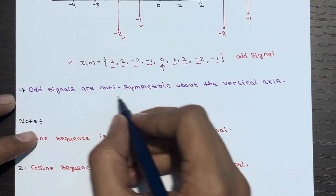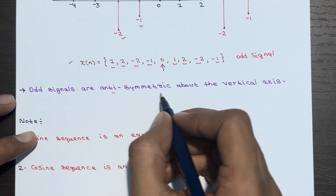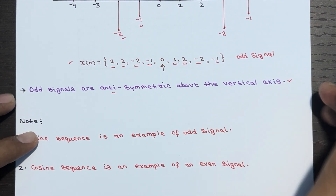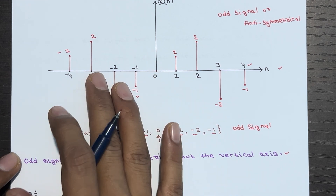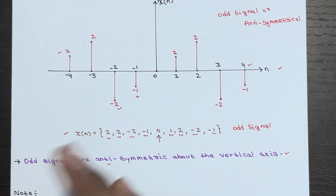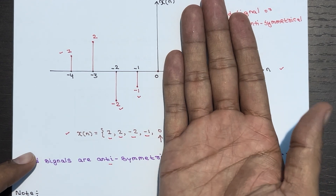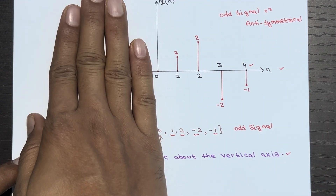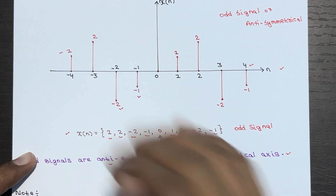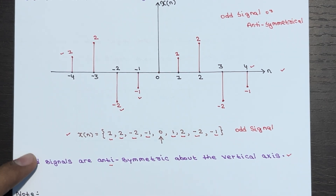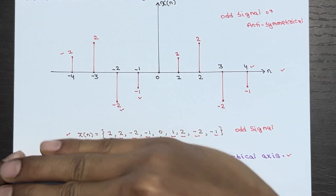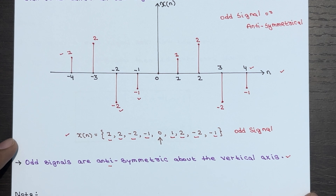In simple terms, odd signals are anti-symmetrical about the vertical axis. First fold the signal, then flip it — you get the anti-symmetrical version.